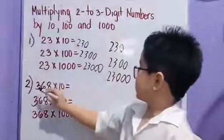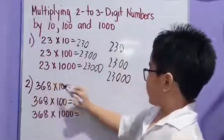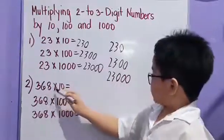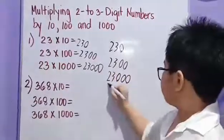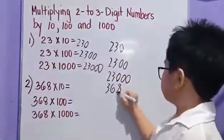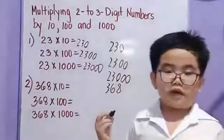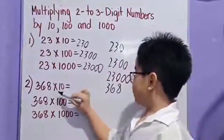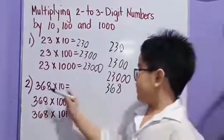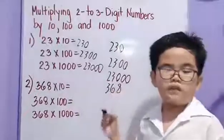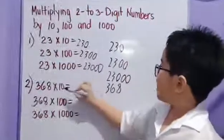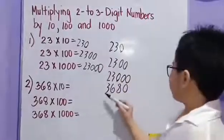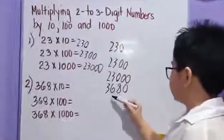Three hundred sixty-eight times ten: we have three hundred sixty-eight times one, we have three hundred sixty-eight. Do you remember that any number multiplied by one, the answer is always the number? Let's count how many zeros we have — one. Let's add one zero. Then we have three thousand six hundred eighty.